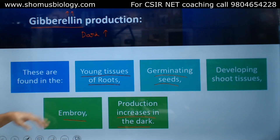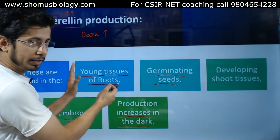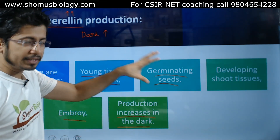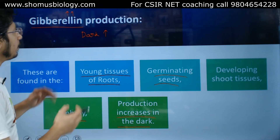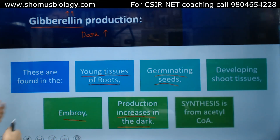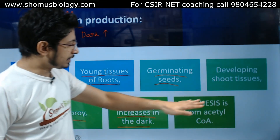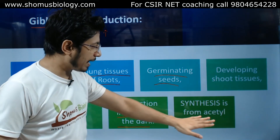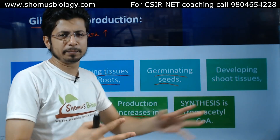If you look at newly growing roots and germinating seeds, these are generally present in dark conditions, so they tend to increase in amount. The synthesis of gibberellic acid is done from acetyl-CoA, which is a very common intermediate.